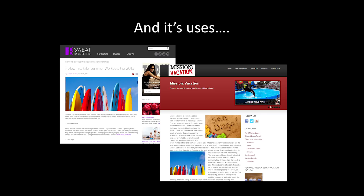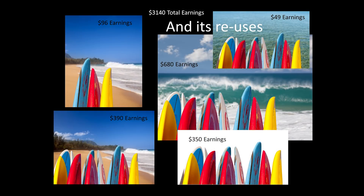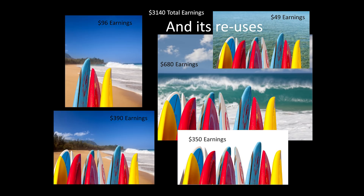Then I thought: why don't I get into Photoshop, extract it from its background, put it in front of some big waves — that looks more like a difficult surfing situation — and here it is against white so a designer can put it into their own images. Altogether it's $3,140 for that one picture because I did a bit of Photoshop magic and turned it into other things.